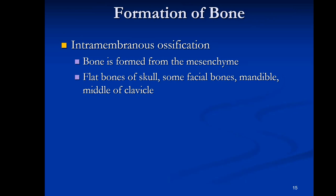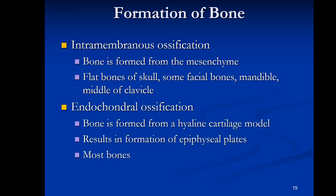There are two strategies by which bones are formed. Intramembranous ossification forms bone directly from embryonic connective tissue called mesenchyme — this includes flat skull bones, some facial bones, the mandible, and the clavicle. Most bones, however, are formed via endochondral ossification, where bone develops from a hyaline cartilage model, involving the epiphyseal growth plates mentioned earlier.